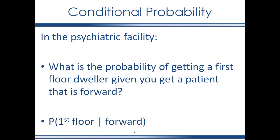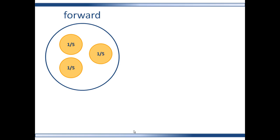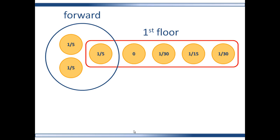Now let's go to the psychiatric facility. What is the probability of getting a first floor dweller given you get a forward patient — one of those talkative types? You are guaranteed to get a forward patient. What is the probability that they will live on the first floor? For the psychiatric facility, remember that there were also 15 total residents, but each patient did not have an equal probability of being sampled. Some patients had a zero probability of being sampled, some had one-fifth probability, others had one-fifteenth probability, and still others had one-thirtieth probability of being sampled.